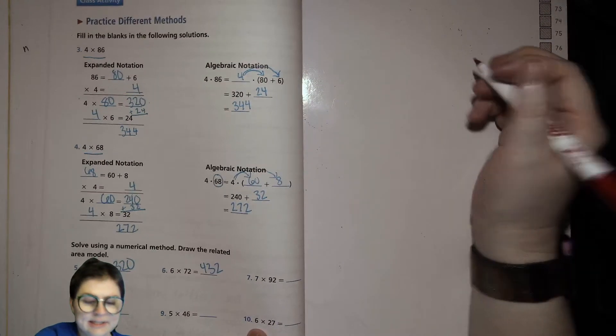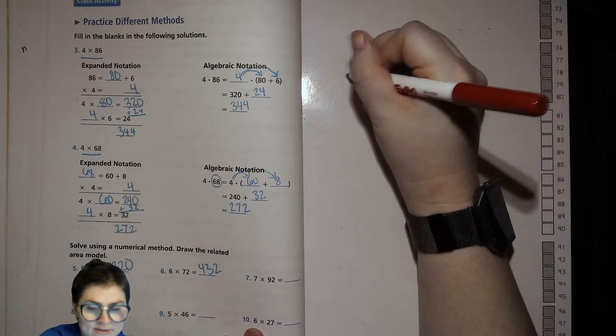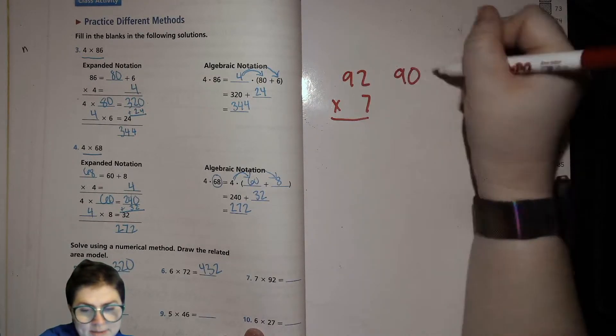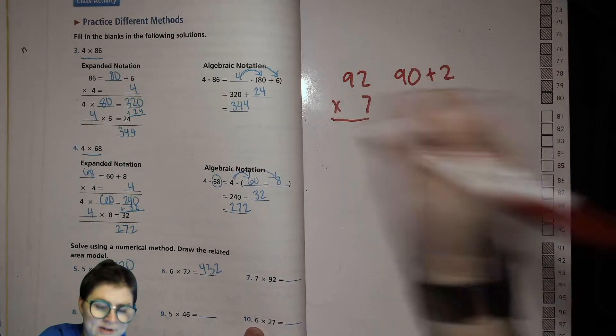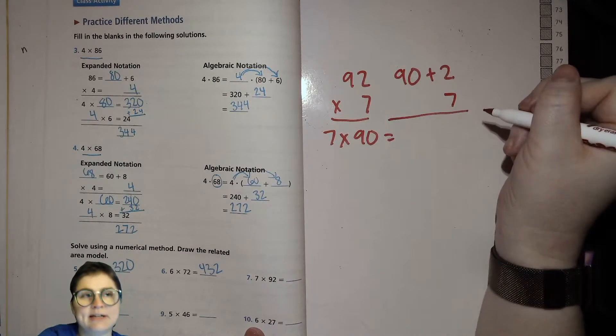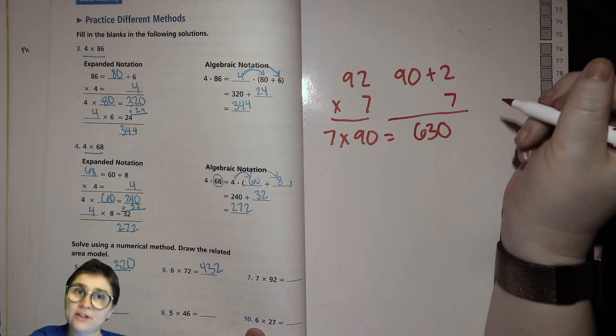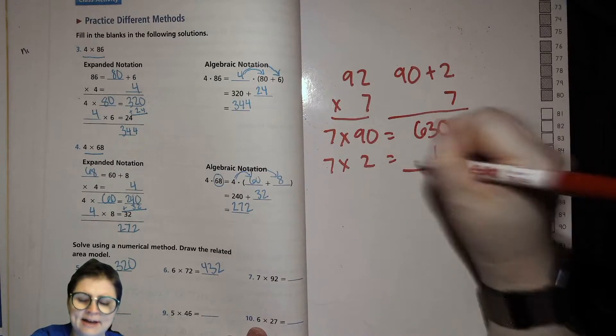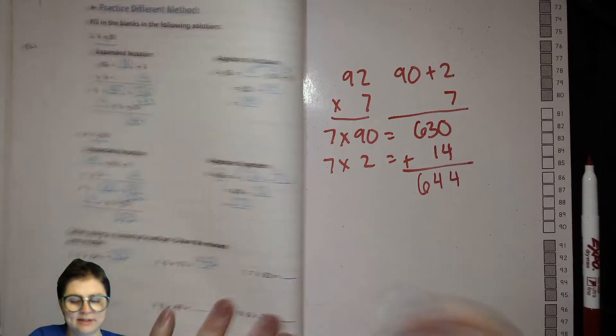Let's do the expanded notation one for this one. So 7. 92 times 7. We're going to take 92, 90 plus 2, 7 down here. Then we're going to do 7 times 90. What's 7 times 90? 7 times 9 is 63, 7 times 90 is 630. 63 times 10. 7 times 2 is 14. Add them up. 4, 4, 6. 644.